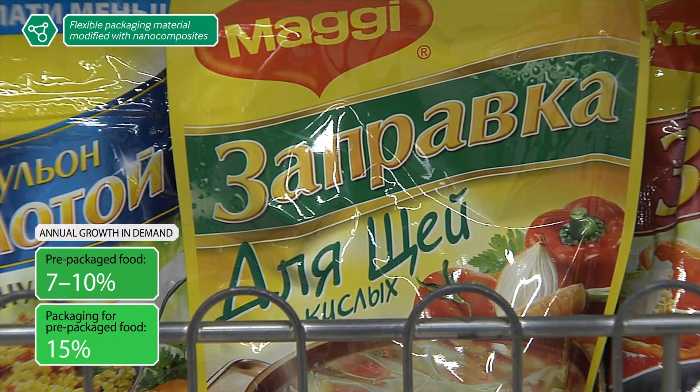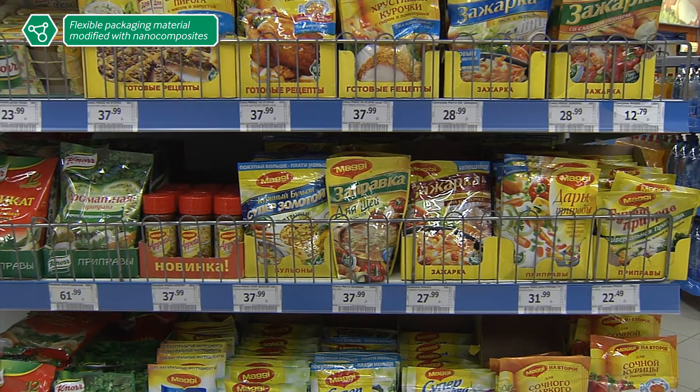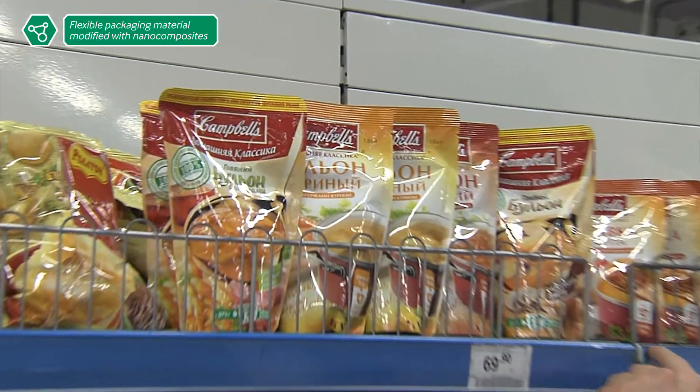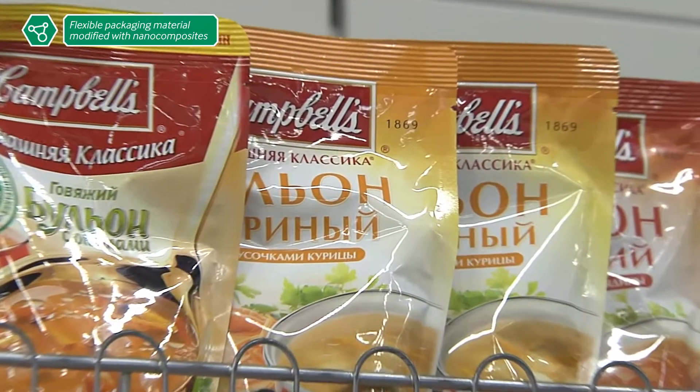Food is packed hot and prepared at home right in the packaging. Packaging material usually contains a layer of aluminium foil, which protects the contents from its environment.